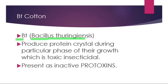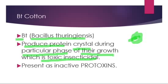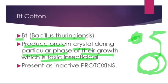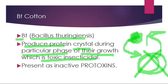How does this BT toxin work? That particular BT produces protein crystals during a particular phase of its growth. They produce some sort of protein crystals — kuch protein ke crystals bana te hain apni growth ke doran — which are insecticidal or toxic. It means that whenever some insect acts upon the cotton, ye jo particular toxin hai, that protein crystal will enter into the insect's body and it will kill it. Lekin that particular toxin is present in the plant and it is also present in the Bacillus thuringiensis.